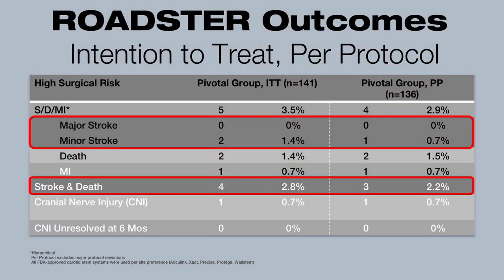The results in 141 high surgical risk patients revealed no major strokes, two minor strokes, and two deaths. The overall stroke rate of 1.4% is the lowest ever reported in a prospective multicenter trial of carotid artery stenting (CAS).